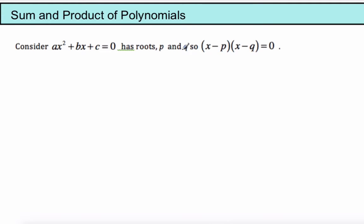I know that this is in factored form (x - p)(x - q) = 0. So if I multiply this out, x² - px - qx + pq, that equals zero.